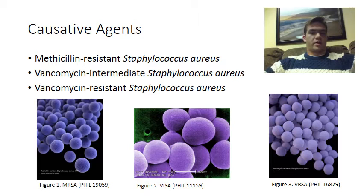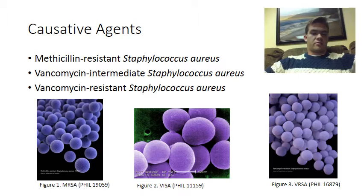In the past, the antibiotic that we've used to kill MRSA has been vancomycin, but recently strains of Staphylococcus aureus that are resistant either intermediately or totally to vancomycin have cropped up — vancomycin-intermediate Staphylococcus aureus, or VISA, or vancomycin-resistant Staphylococcus aureus, VRSA.